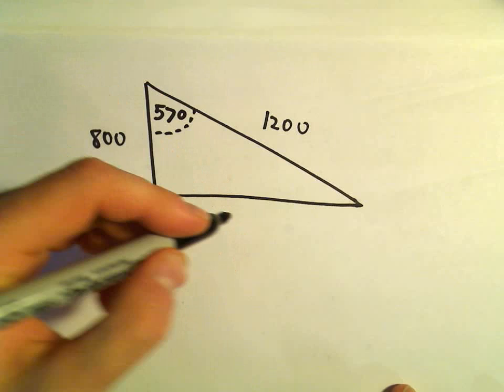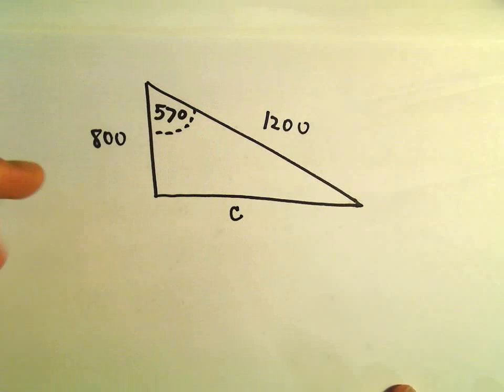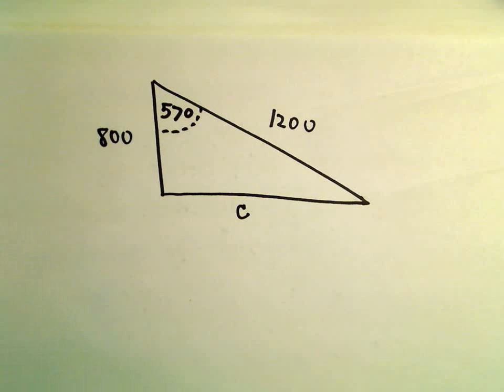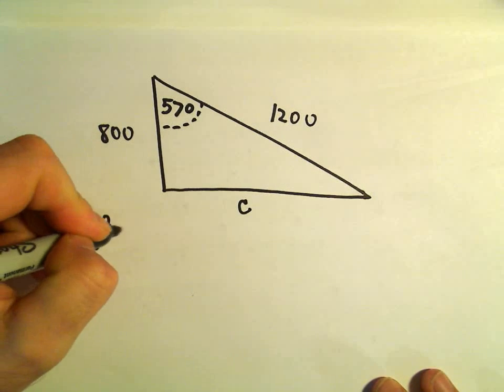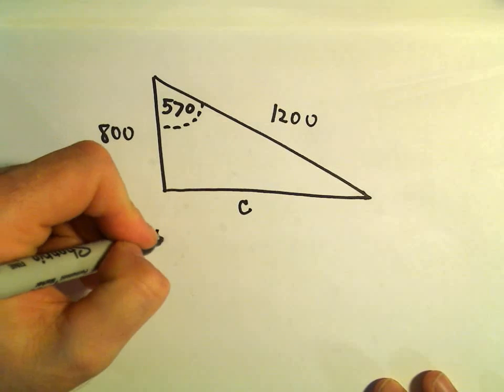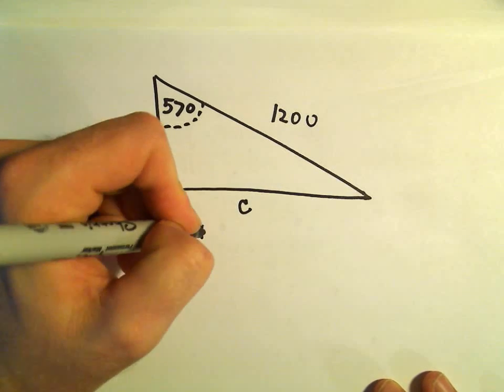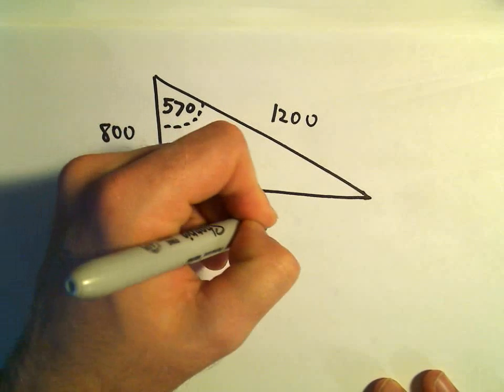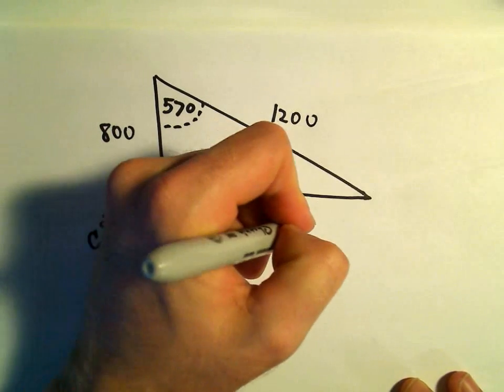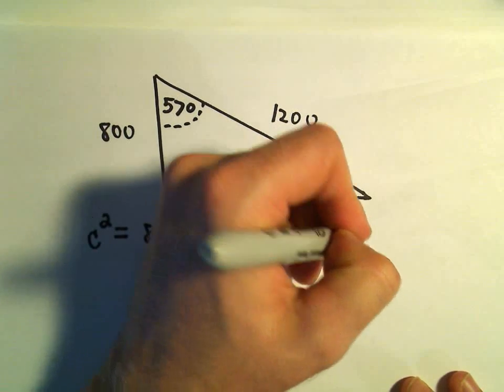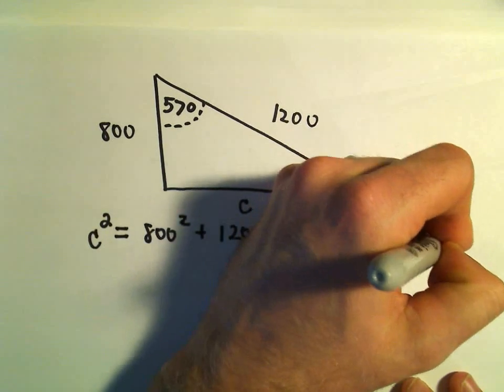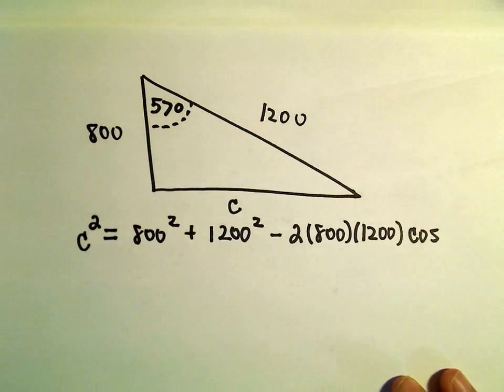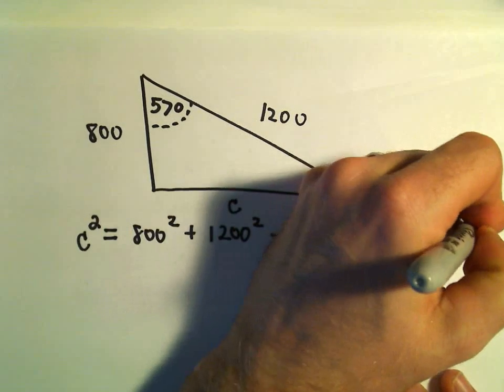So the first thing we're going to have to do is figure out our missing side. I'll call that c here. Now we're just going to use our law of cosines formula. So c squared equals 800 squared plus 1,200 squared minus 2 times 800 times 1,200, and then we take the cosine of the angle that we're given, which is 57 degrees.